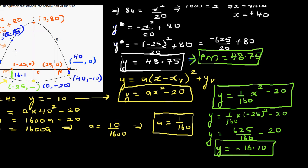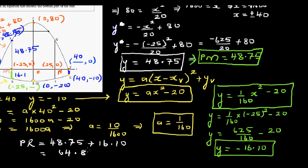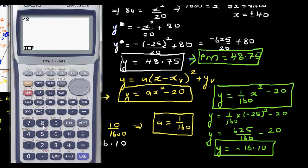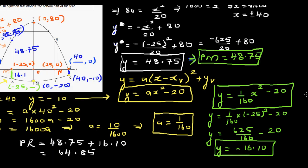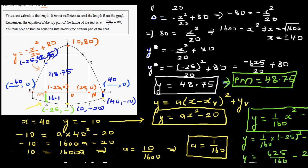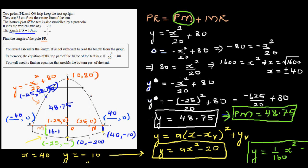We already found PM = 48.75 and MR = 16.10, so PR = 48.75 + 16.10 = 64.85. The total length of PR is 64.85 centimeters. The unit is important — the question states units are in centimeters.